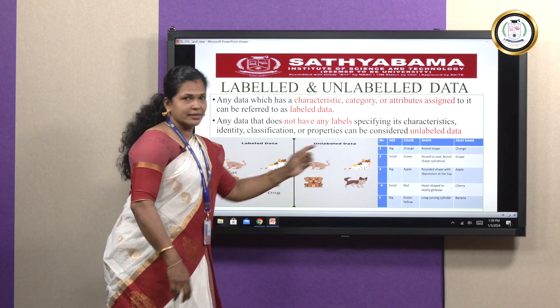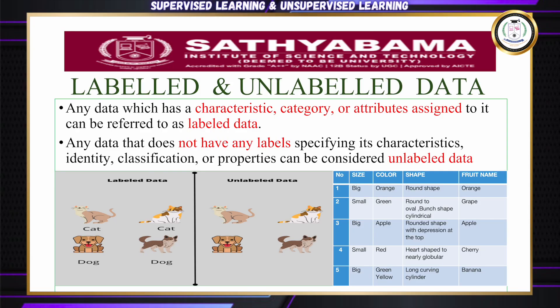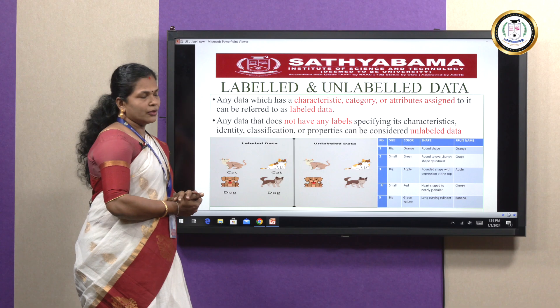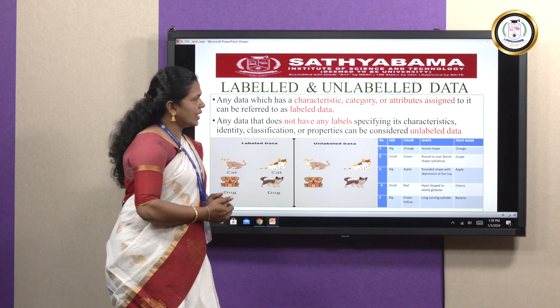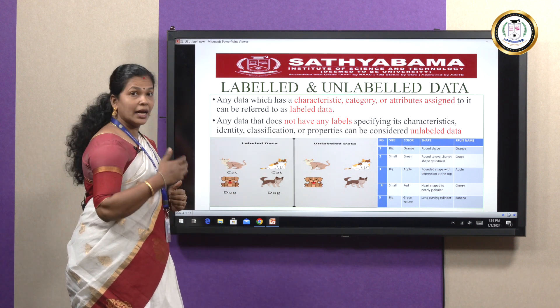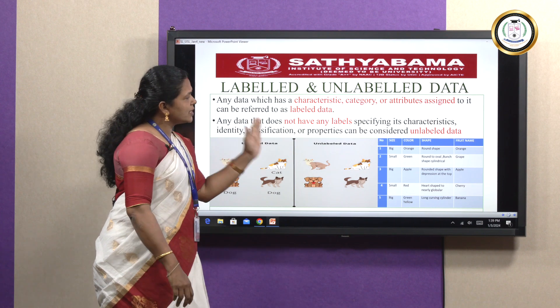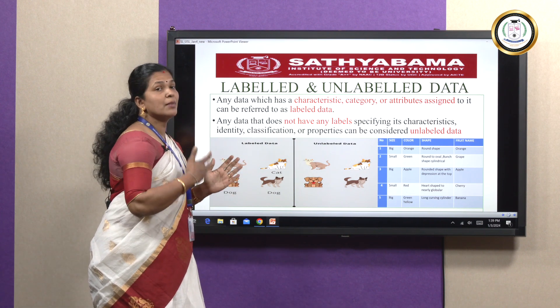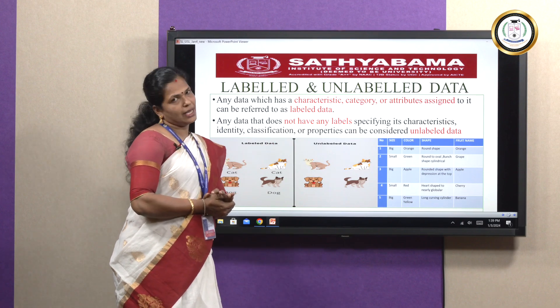Here is another example of labeled data. We have a fruit name table with characteristics: size, color, and shape. For example, orange has size big, color orange, and shape round. We are specifying some characteristics and giving additional information for these fruit names — this is one example of labeled data.